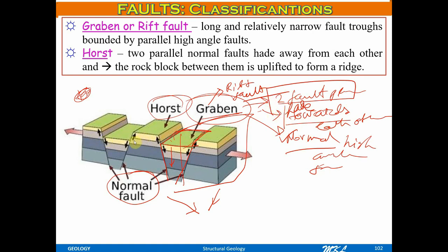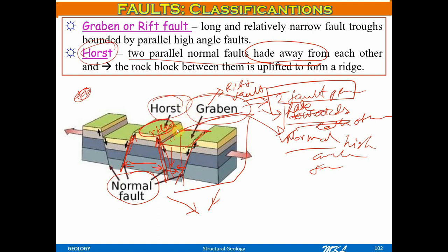For a horst, the opposite is true: two parallel normal faults head away from each other. The rock block between them is uplifted to form a ridge — called a horst or ridge structure. A graben generally creates a valley-like structure; a horst generally creates a ridge-like structure. Grabens are formed due to tensional forces — tensional crustal forces pulling the crust apart — which are basically responsible for the formation of grabens.